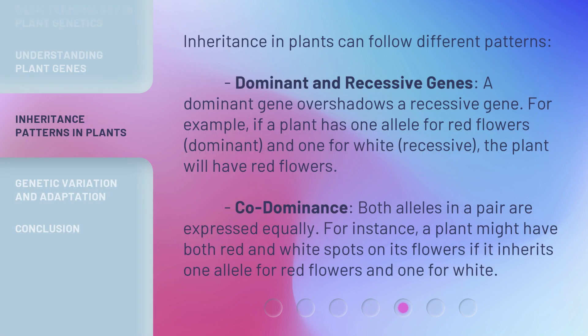Inheritance in plants can follow different patterns. With dominant and recessive genes, a dominant gene overshadows a recessive gene. For example, if a plant has one allele for red flowers — dominant — and one for white — recessive — the plant will have red flowers. With co-dominance, both alleles in a pair are expressed equally. For instance, a plant might have both red and white spots on its flowers if it inherits one allele for red flowers and one for white.